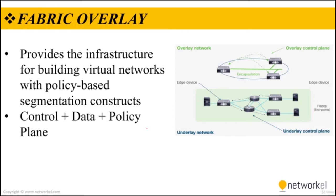The fabric overlay provides the infrastructure for building virtual networks with policy-based segmentation constructs, as well as providing dynamic host services for mobility and enhanced security beyond normal switching and routing capabilities. The fabric overlay will be fully automated regardless of the network underlay model used, including all necessary overlay control plane protocols and addressing. There are three basic planes of operation in the fabric overlay: the control plane, data plane, and policy plane. The control plane contains the settings, protocols, and tables for fabric-enabled devices that provide the logical forwarding constructs of the fabric overlay.